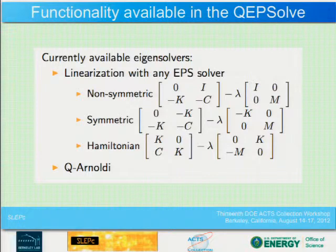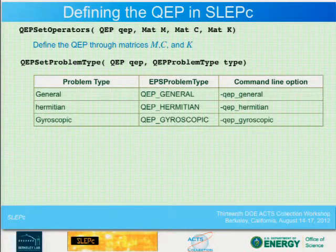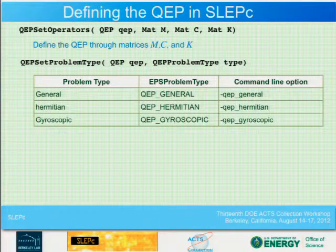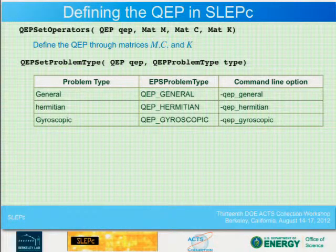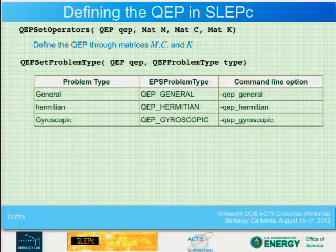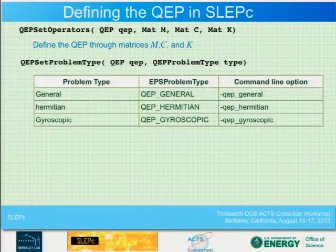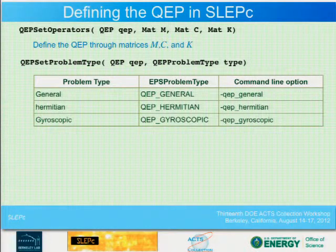For the QEP linearization, available options are: non-symmetric, symmetric, Hamiltonian, or the Arnoldi method. The flag values for QEP set problem type include general, Hermitian, or gyroscopic. One important step is calling QEP set operators to pass all three matrices M, C, and K — depending on the problem, one of those matrices can be null.